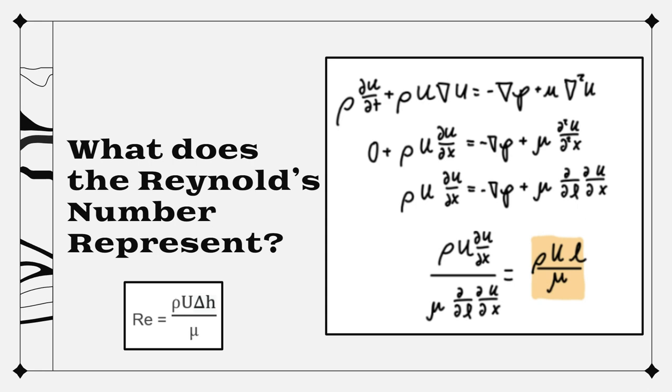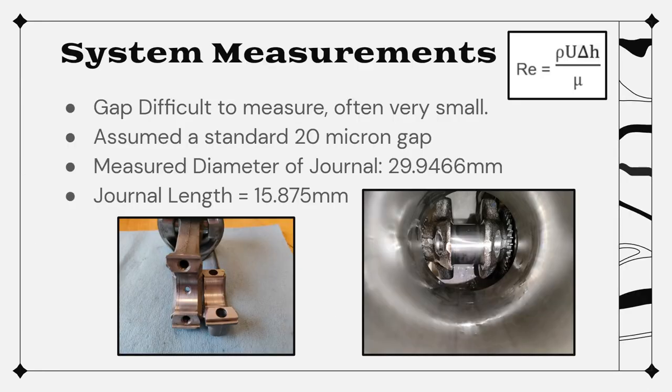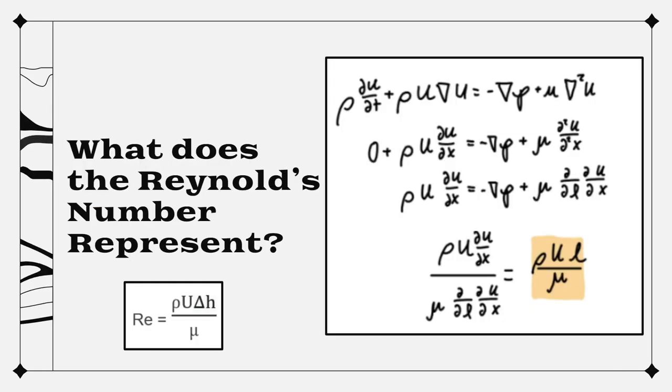What this allows you to see is that for a high Reynolds number, you get flow that is governed by the convective forces and that creates turbulent flow. And for a low Reynolds number, you get flow that's governed by the viscous forces creating laminar flow.